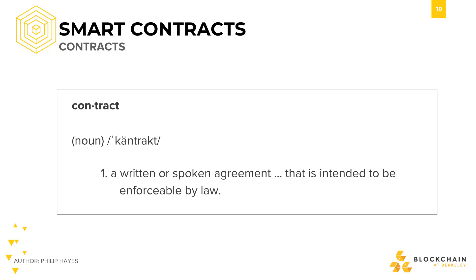So just by these words alone, it sounds like we need some sort of consensus going on in our smart contract system. And through consensus, we should be able to agree on both the contents of the contract and also the execution of the contract.